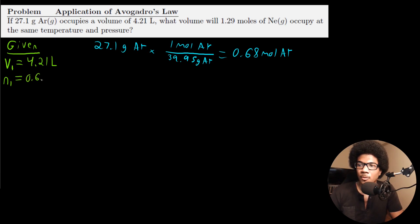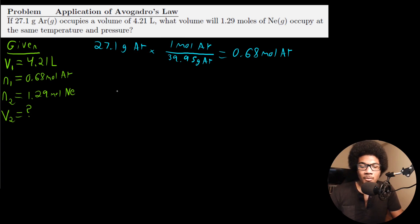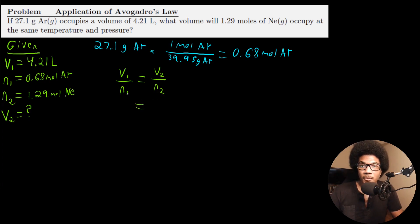We're also given the number of moles of neon: N2 is equal to 1.29 moles. We're asked how much volume this will occupy, so we're solving for V2. From Avogadro's Law, V1 / N1 = V2 / N2. Isolating V2 gives us V2 = N2 × V1 / N1.